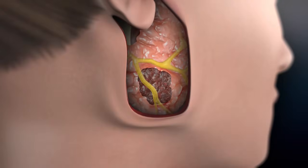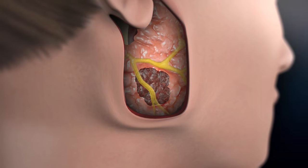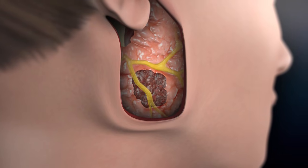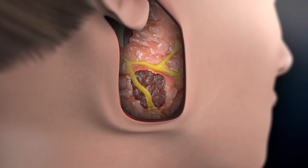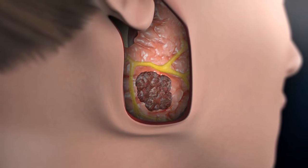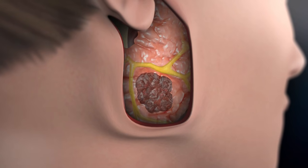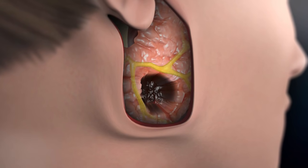If the tumor is deep to the facial nerve, then the branches of the facial nerve that lie superficial to the tumor are identified and separated from the parotid so that we can get underneath and remove the tumor.